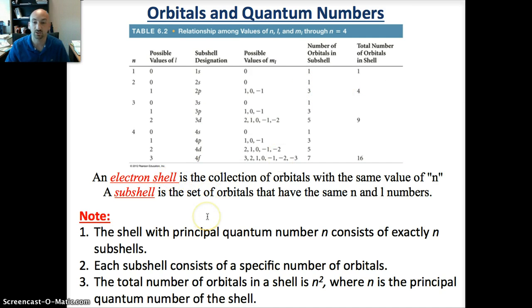When we talk about electron shells, it's just a collection of orbitals with the same value of N, and a subshell is just a set of orbitals that have the same N and L numbers. You should be familiar with those as well.